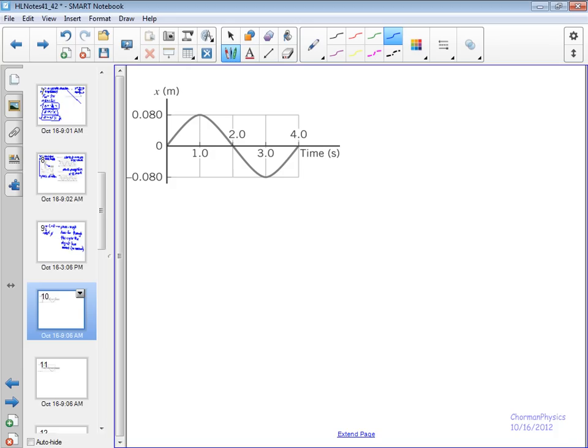Let's do a quick example. You have that graph there of some object's displacement versus time. It is an example of simple harmonic motion. So, for the first part, the question is, what is the amplitude? So, X naught is equal to, look for the maximum displacement, 0.080 meters.